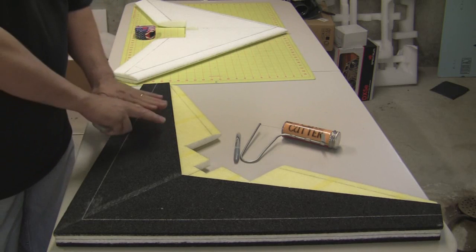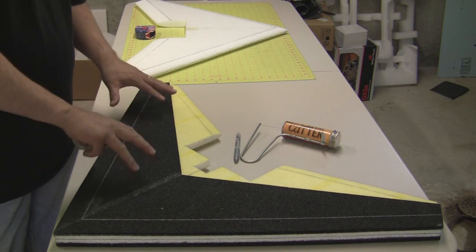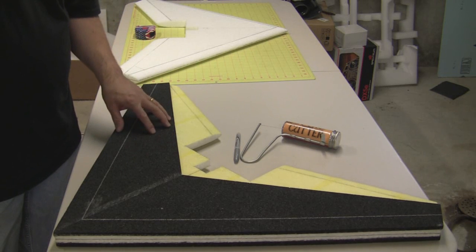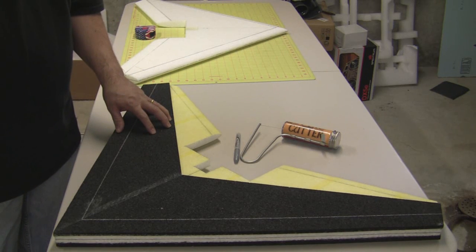Once you do have it glued down, set a board on top of it with some kind of weight until it dries, just to make sure that it's flat, and make sure that the wing is sitting on a flat surface too when you glue them down.